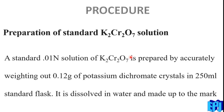The first two steps of this experiment are the same as in the dissolved oxygen experiment. The first step is the preparation of standard K2Cr2O7 solution. A standard 0.01 normal solution of K2Cr2O7 is prepared by accurately weighing about 0.12 g of potassium dichromate crystals, dissolving in water in a 250 ml standard flask, and making up to the mark.